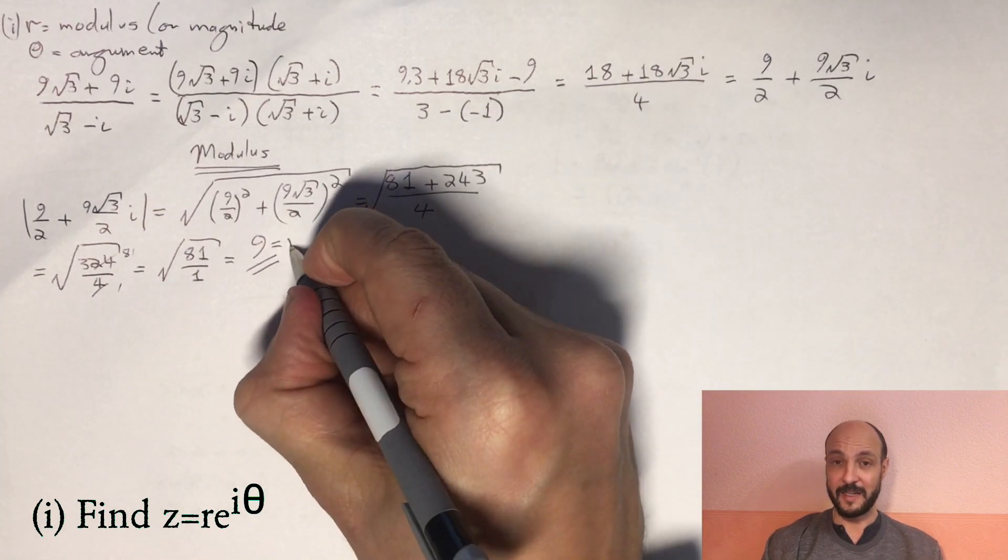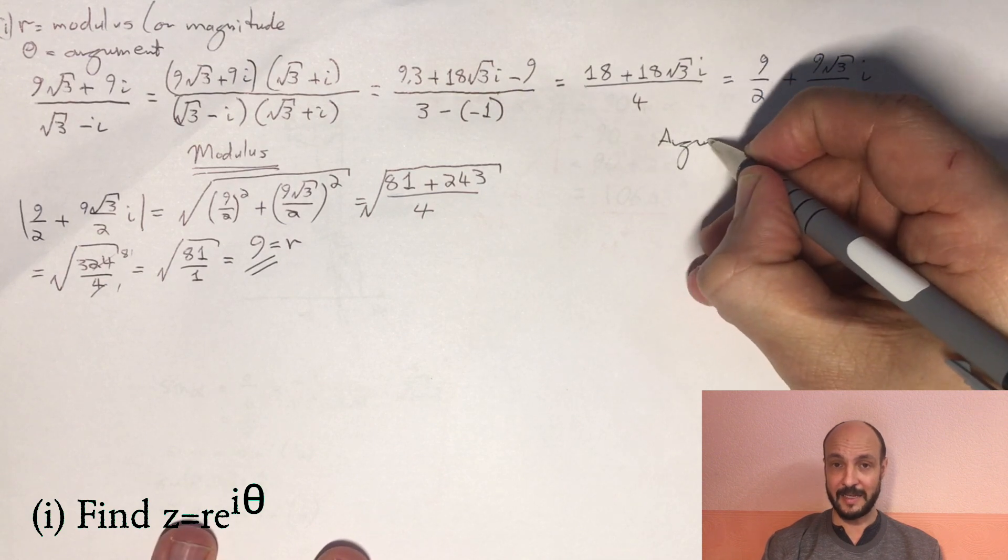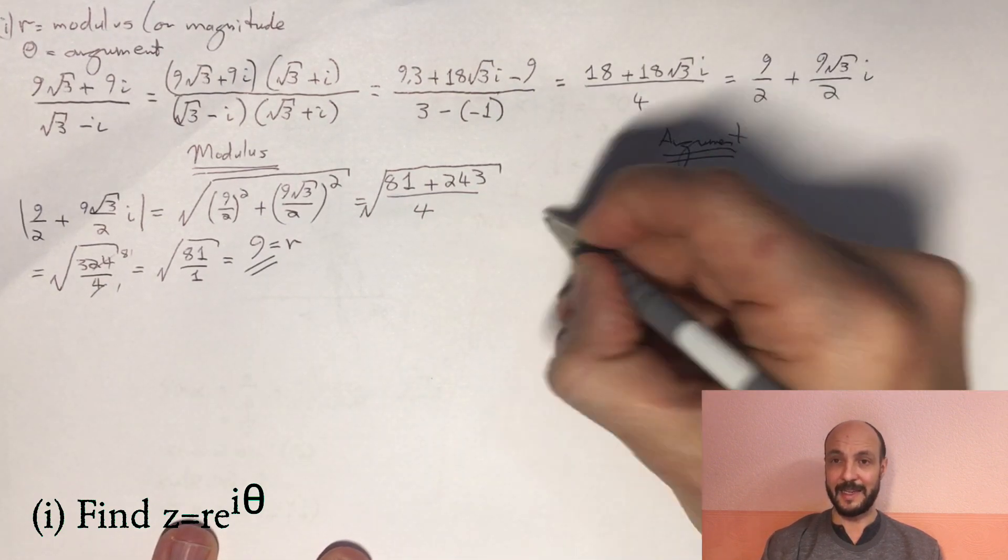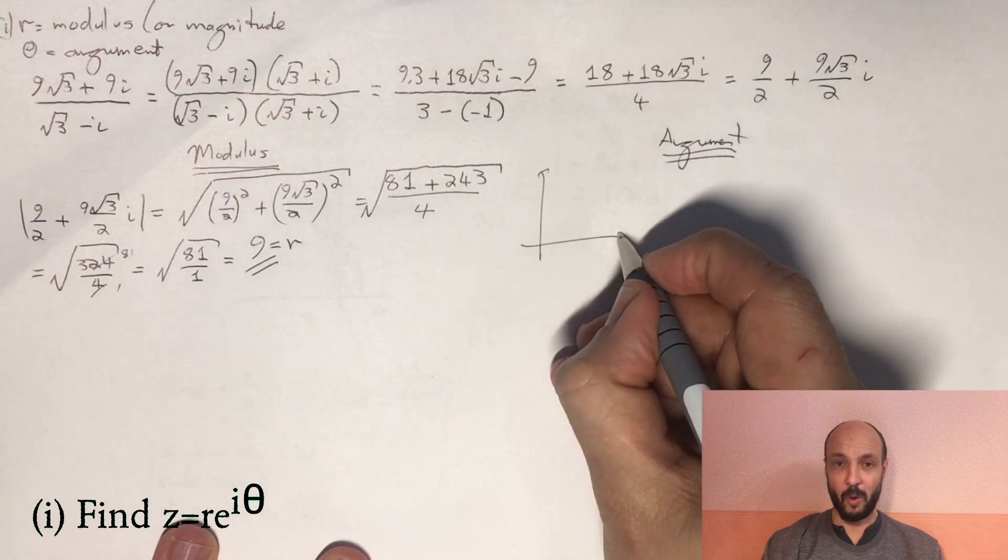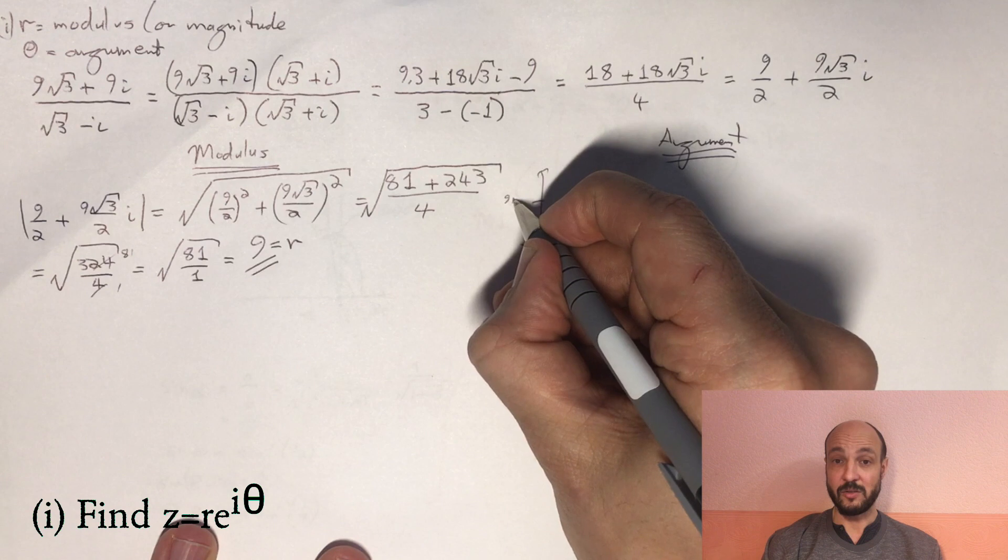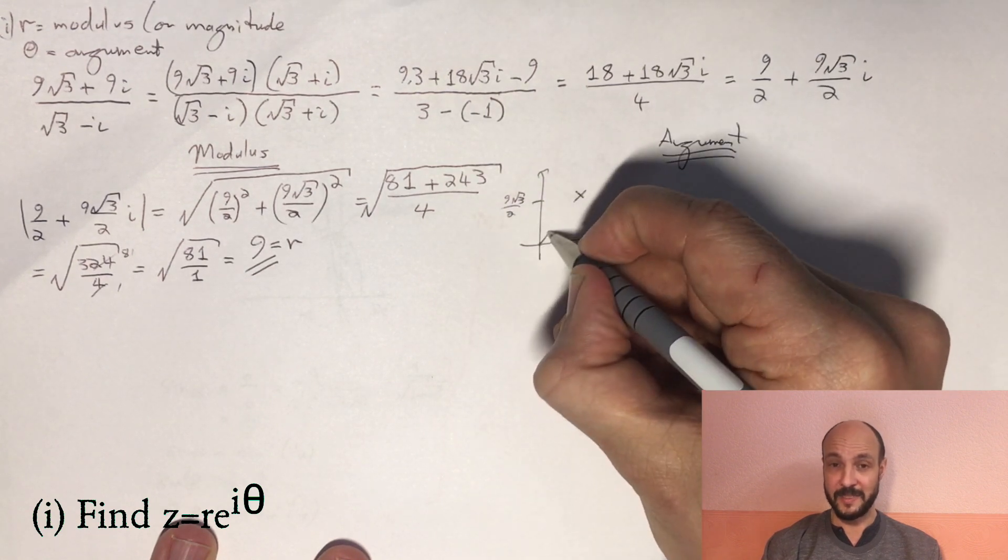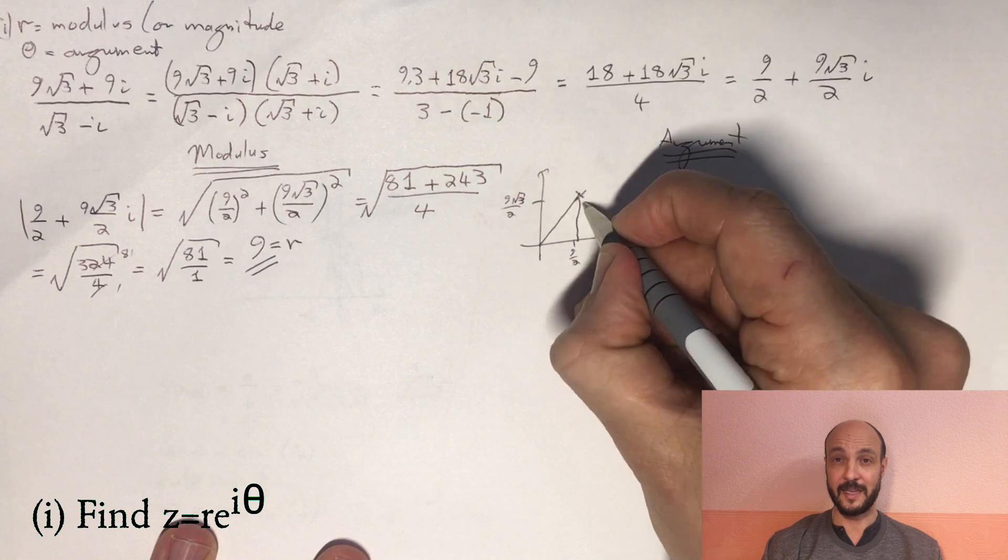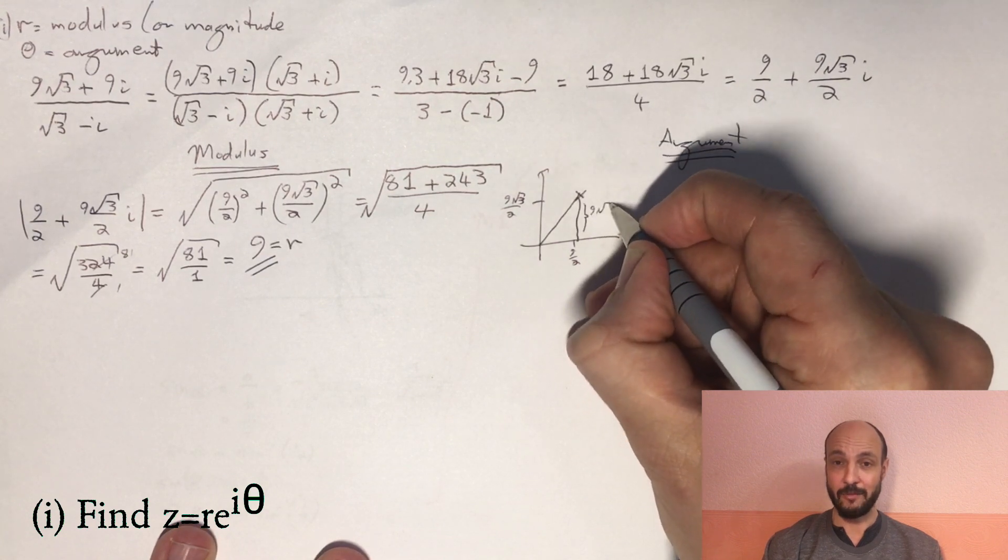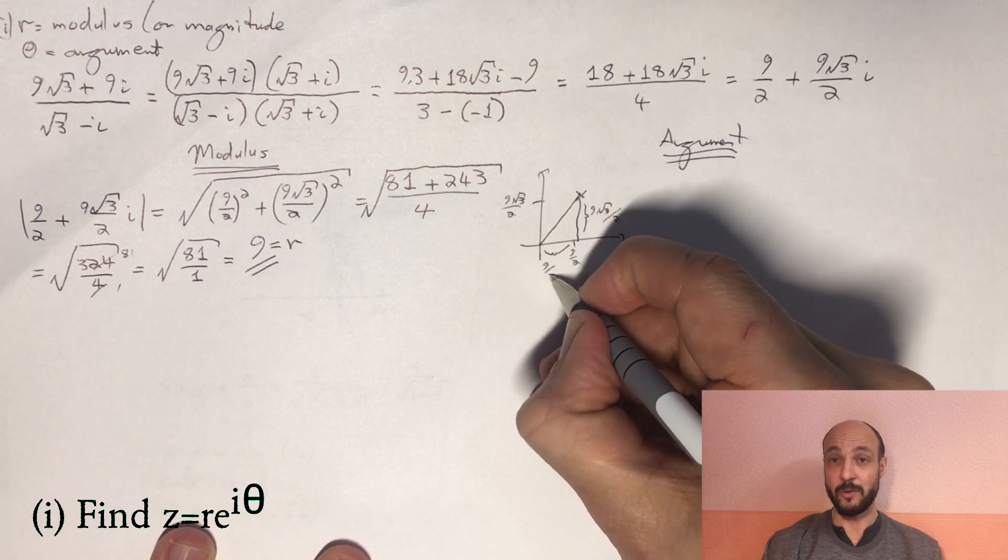We just need to find our argument now. Now to find our argument, if we draw a little sketch, we can see that the x component there is 9/2, and the y component is 9√3/2. And using trigonometry, we can use our tan function. tan θ is the opposite over the adjacent. So in this case, tan θ is 9√3/2 divided by 9/2, which is √3.